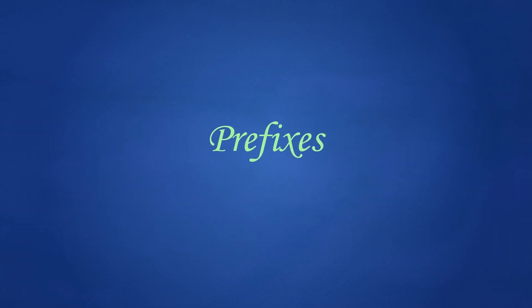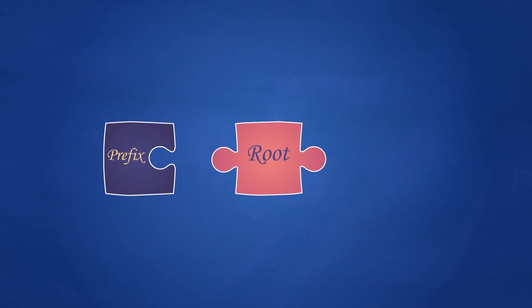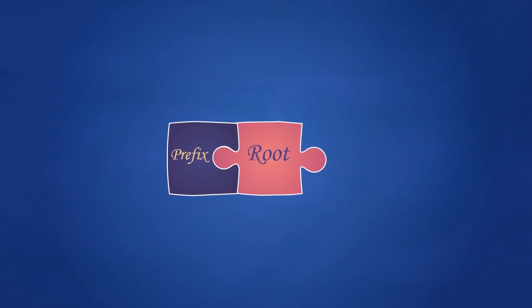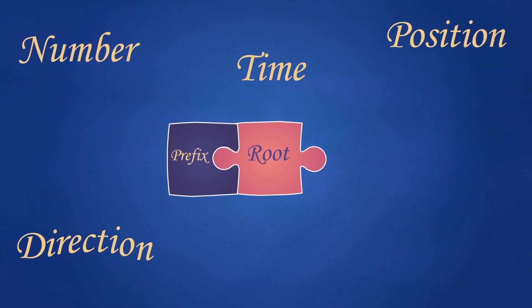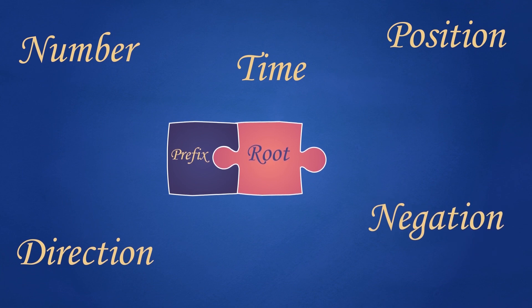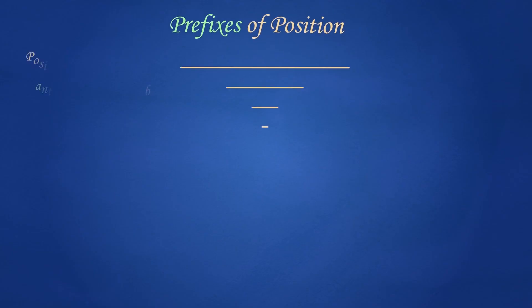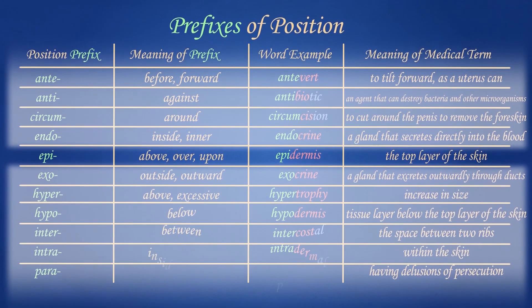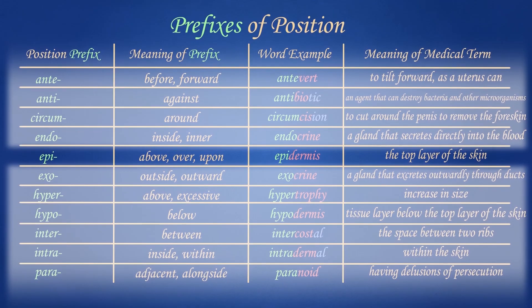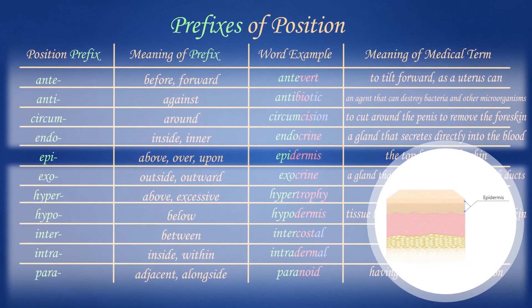Next, we are going to talk about prefixes. A prefix is a word element attached to the beginning of a root and does not require combining vowels. However, not all medical terms have a prefix. Adding or changing a prefix changes the meaning of the word. Prefixes usually indicate a number, time, position, direction, or negation, and can be grouped according to their descriptive function. An example of prefixes of position is the prefix 'epi-', which means 'above, over, or upon', as in the term 'epidermis', which means 'the top layer of the skin'.